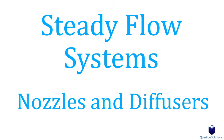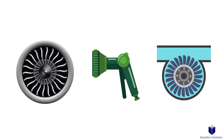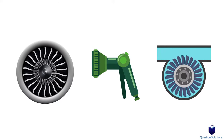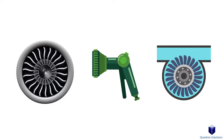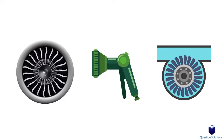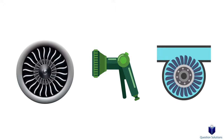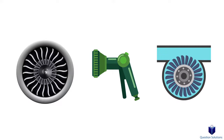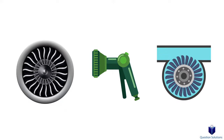Let's talk about steady flow systems. When we have a device that operates under the same conditions for a long time, we call them steady flow devices. You've seen a lot of them already, like turbines, compressors, even your garden hose nozzle — all steady flow devices, because once they start up, the fluid flows through the system steadily. That process is called a steady flow process.